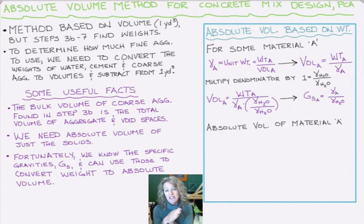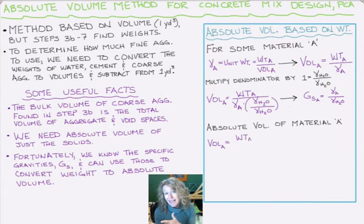And we can find the formula for the absolute volume of material A. The volume of material A would then be equal to the weight of material A divided by its own specific gravity and divided by the unit weight of water.